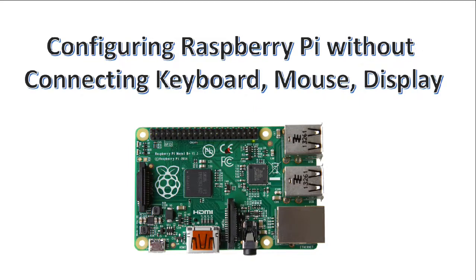Now, if I talk about my previous videos, I have already made you learn how to configure various operating systems on Raspberry Pi, like Raspbian Jessie, Raspbian Jazzy, Kali Linux, Windows IoT, OpenELEC, OSMC, and many more. In those videos, we made two parts. In the first part, I showed how to download the image, format the SD card using SD Formatter, and use Win32 Disk Imager software to install the image on the SD card. In part two, we connected the SD card to the Raspberry Pi along with keyboard, mouse, and display and got the graphical interface.